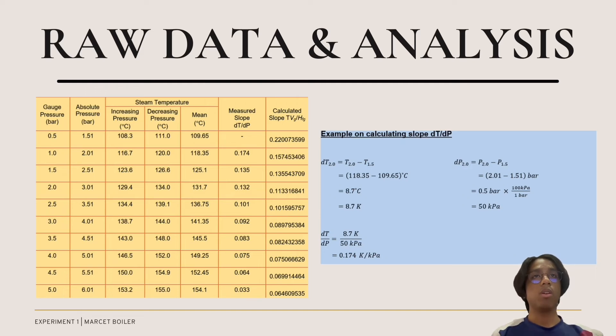How do we find all these values? For dT over dP, we can see the calculation on our right side. dT just means the differential T at 2 bar. The 2 bar is the absolute pressure. The temperature at T2.0 will be minus T1.5, which is 118.35 minus the temperature at the absolute pressure 1.5. So we got the value 8.7 Celsius, which can also be converted to 8.7 Kelvin. It's just the same because we are finding the differential. Next, for dP2.0, we need to find the differential pressure at 2.0 minus the pressure at 1.5. Hence we got 0.5 bar, which needs to be further converted into kilopascals. So just times 100 kPa, and we got 50 kPa.